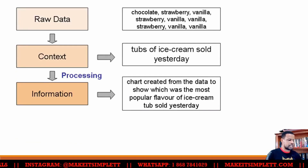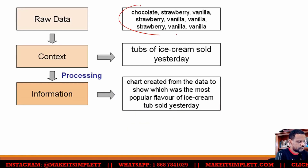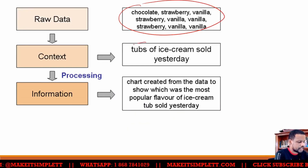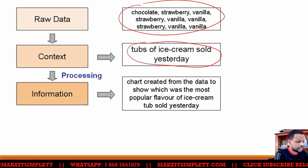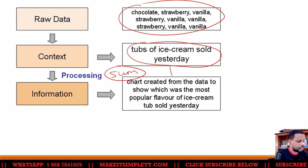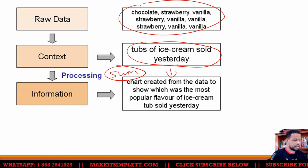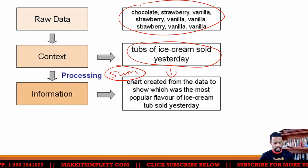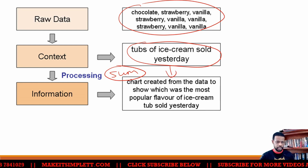You have raw data of all sorts of ice cream names. The context is: these are tubs of ice cream that were sold yesterday. So now we could process them and find a sum.